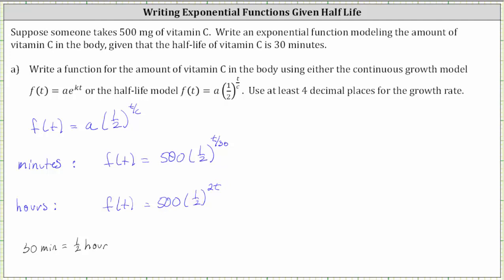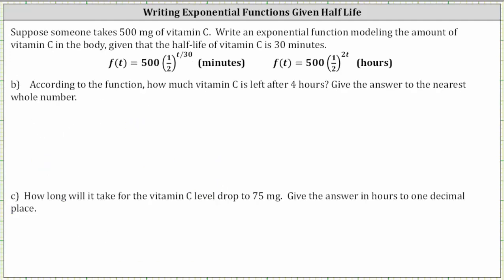Now let's answer some additional questions. Part B: according to the function, how much vitamin C is left after four hours? Give the answer to the nearest whole number. If you want to use the function in minutes, four hours equals four times 60, or 240 minutes. So we have F of 240 equals 500 times one-half raised to the power of 240 divided by 30. Since 240 divided by 30 is eight, this gives us 500 times one-half raised to the power of eight.